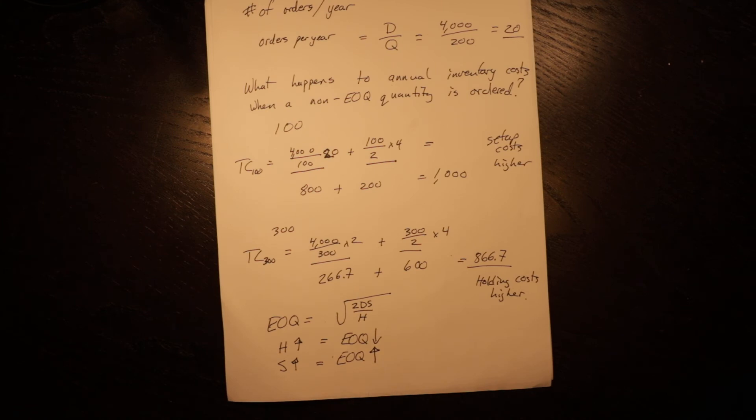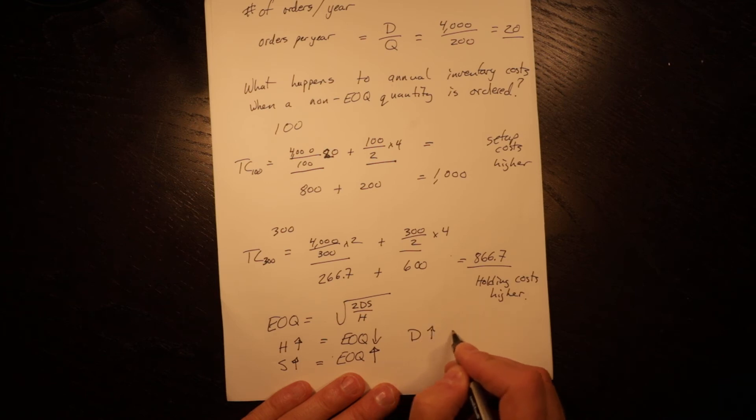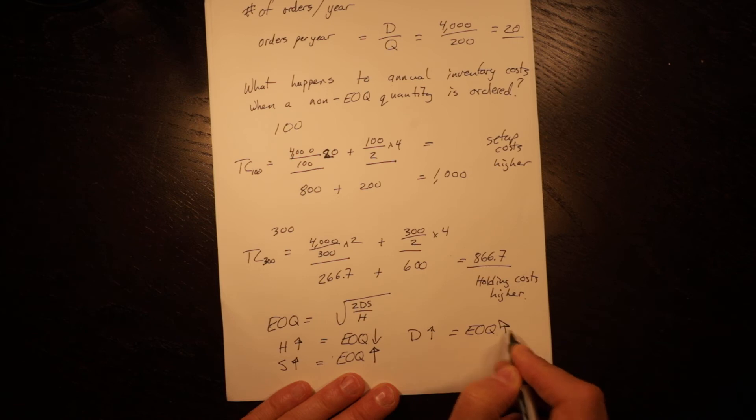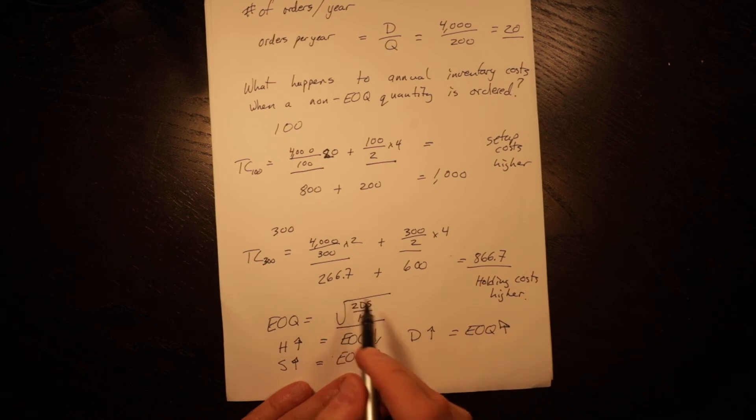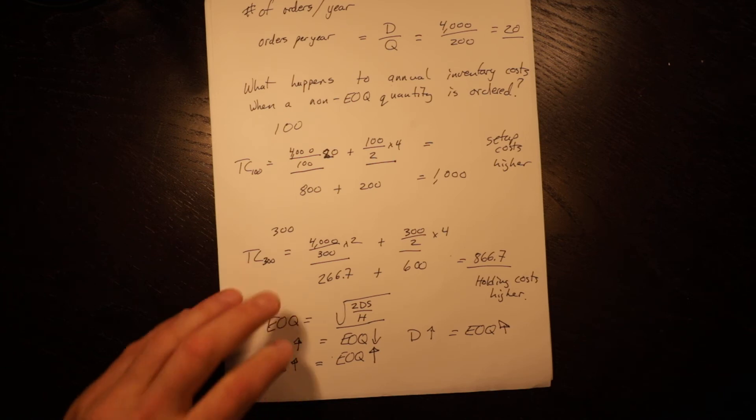If setup costs go up, EOQ goes up. So the more it costs you to order, the less often you want to order, the larger your order quantities are going to be. And the same, if demand goes up, EOQ goes up. Even if you don't remember that, if you just look at this formula, you should be able to tell that.